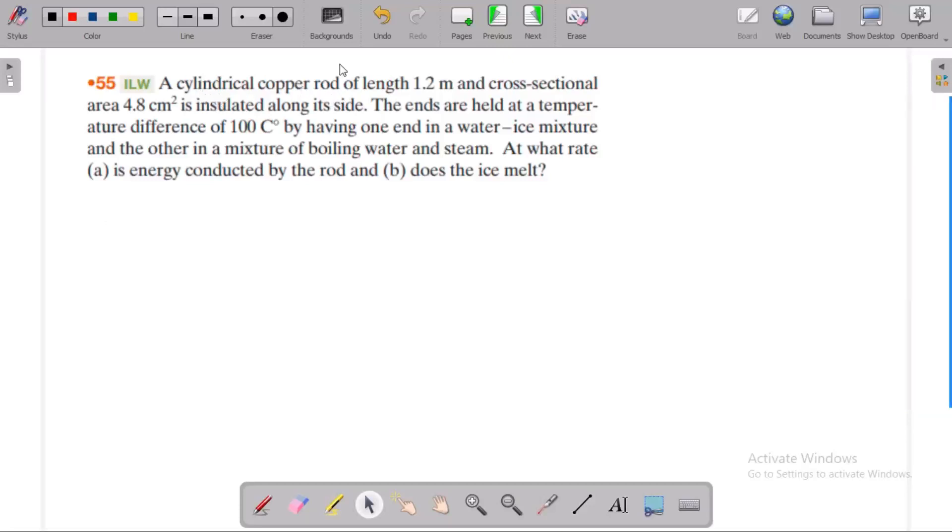A cylindrical copper rod of length 1.2 meters and cross-sectional area 4.8 square centimeters. For a cylindrical rod, we have a cylindrical copper rod. This is a cylindrical copper rod. Length of 1.2 meters, area 4.8 square centimeters.